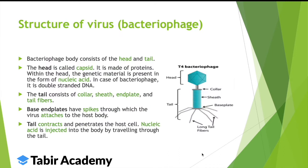Looking at the structure of a specific virus — in particular, a bacteriophage, which is a virus that infects bacteria. There are two main parts. The first part is the head, also called the capsid, made of proteins arranged as capsomers. In the head there is genetic material in the form of nucleic acid, which can be DNA or RNA. In the case of a bacteriophage, it's double-stranded DNA.